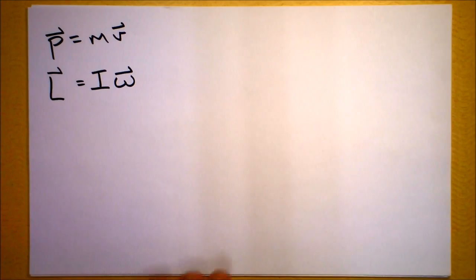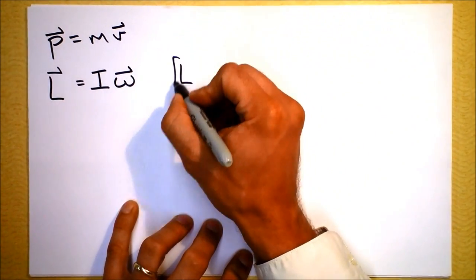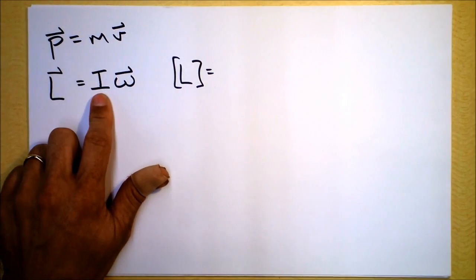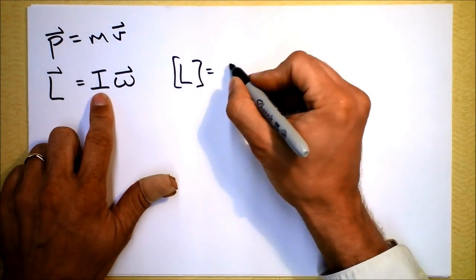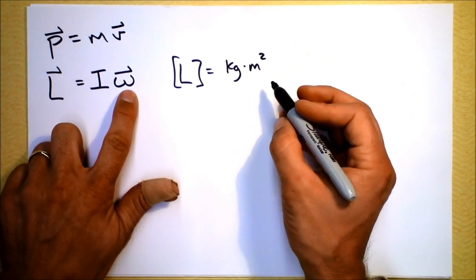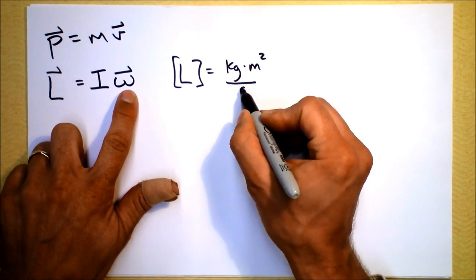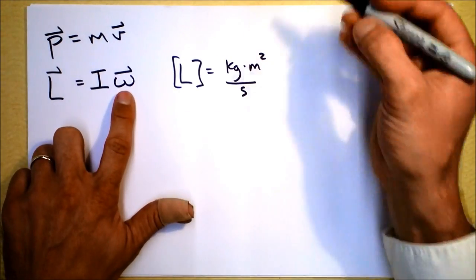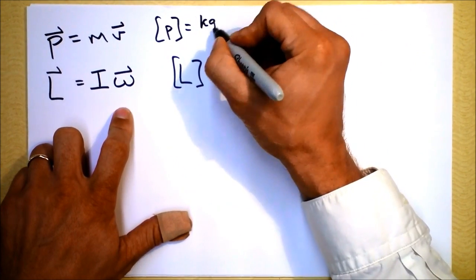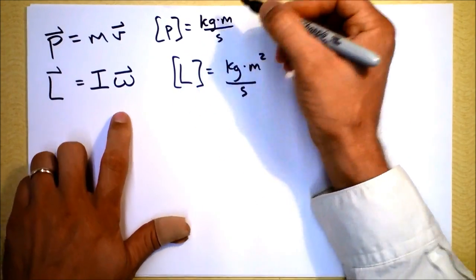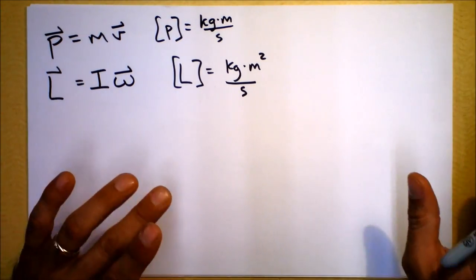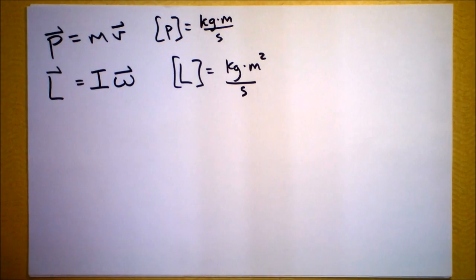Look at these units. The units of L: the moment of inertia has units of mass times distance squared, so we've got kilogram·meters² and then we're dividing by seconds — kilogram·meters² per second. The units of linear momentum p are just kilogram·meters per second. So kilogram·meters² per second versus kilogram·meters per second.